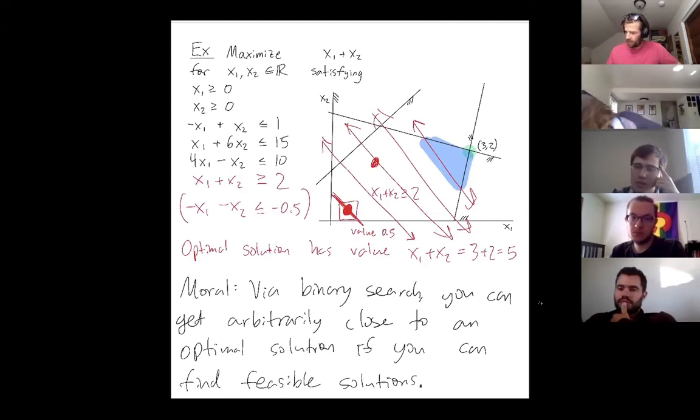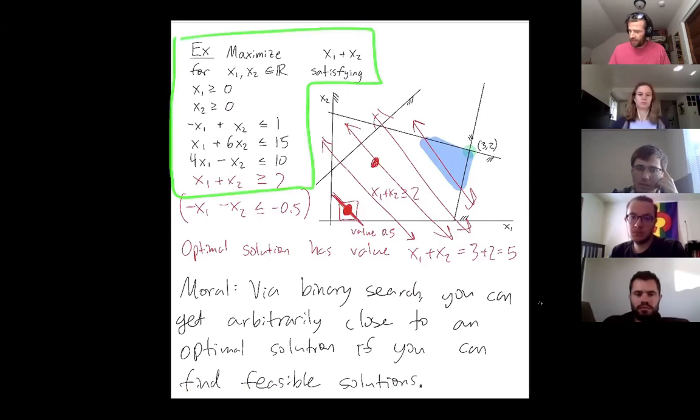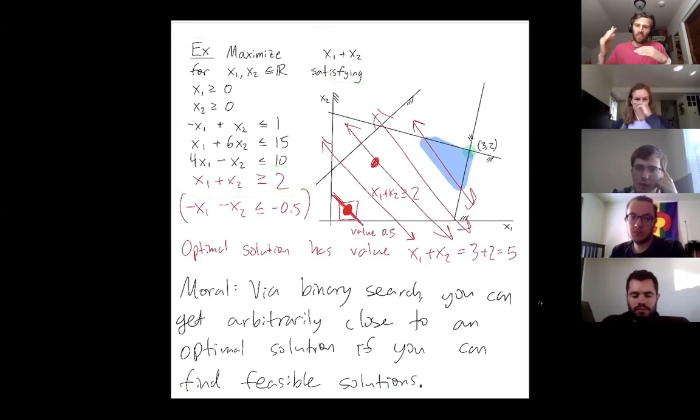So we're using this algorithm for finding feasible solutions on problems that keep getting updated. And the way we keep updating our problem is it's this entire problem, right? But we just keep changing this value to be larger than the best solution we found so far.